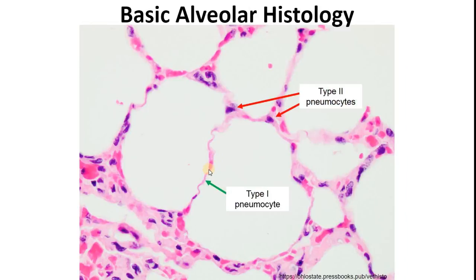Alveolar histology plays an important role in facilitating oxygen and carbon dioxide exchange between alveolar spaces and the blood. The alveolar wall, also called alveolar septum — or septa for plural — is very thin, as we can see here. It is composed of a single layer of alveolar epithelium known as pneumocytes, predominantly type 1 pneumocytes with fewer type 2 pneumocytes, which is immediately followed by a very small blood capillary lined by a single thin layer of flattened endothelial cells, as we can see here.